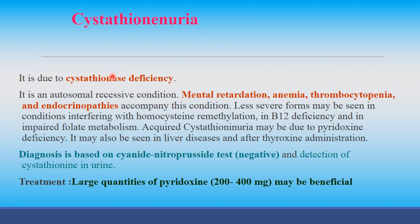Cystathioninuria is due to cystathionase deficiency. It is an autosomal recessive condition. Mental retardation, anemia, thrombocytopenia, and endocrinopathy accompany this condition. Severe forms may be seen in conditions interfering with homocysteine remethylation, in B12 deficiency, and in impaired folate metabolism. Acquired cystathioninuria may be due to pyridoxine deficiency, liver disease, and after thyroxine administration.